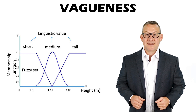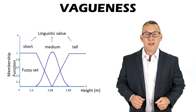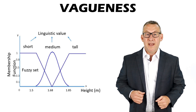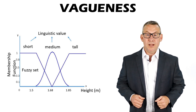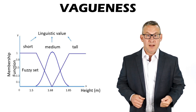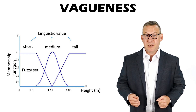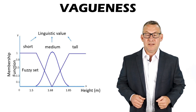Vagueness is a lack of distinction between boundaries, or a lack of distinction between objects, classes, or categories. Fuzzy logic represents vague classifications.